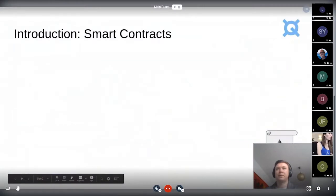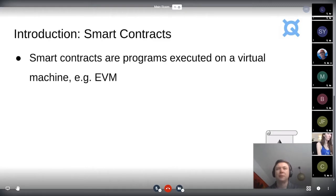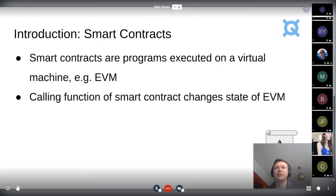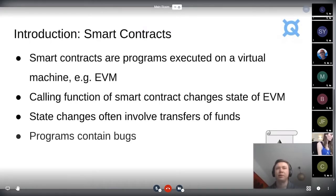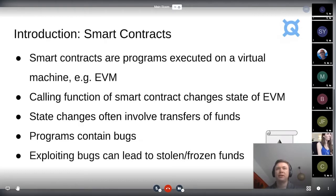So probably most of you already know this, but I created the presentation for general public, not assuming that everyone knows about smart contracts. They're just programs executed on a virtual machine, the Ethereum virtual machine. Calling a function in a smart contract changes the state of the EVM. These state changes often involve transfers of funds. Programs, of course, might contain bugs, any type of program. So therefore smart contracts also probably contain bugs. And exploiting these bugs in smart contract can lead to stolen or frozen funds, as we've seen many times in the past.